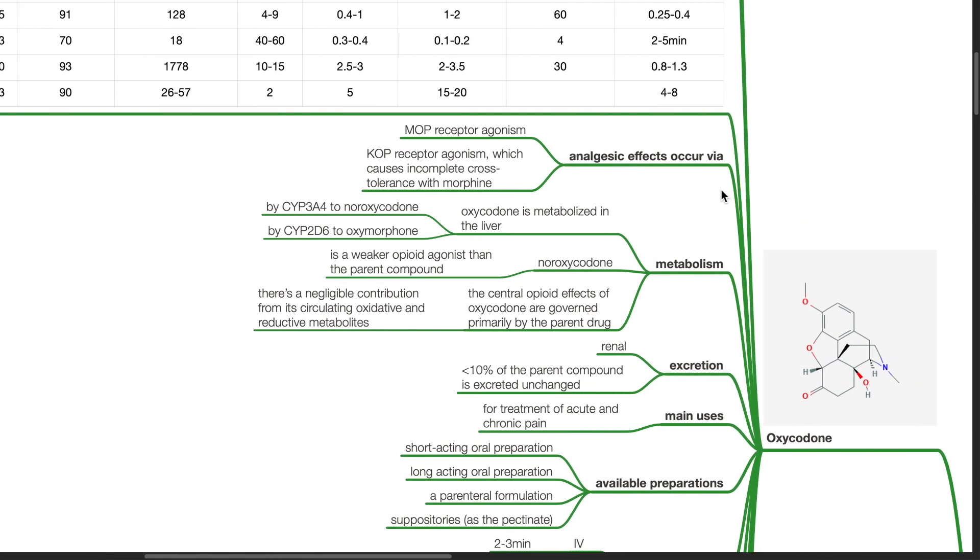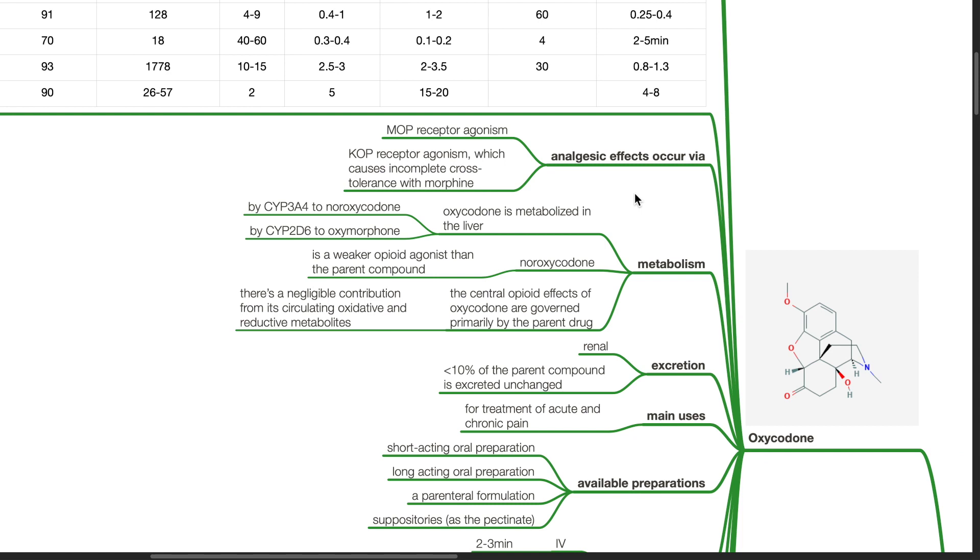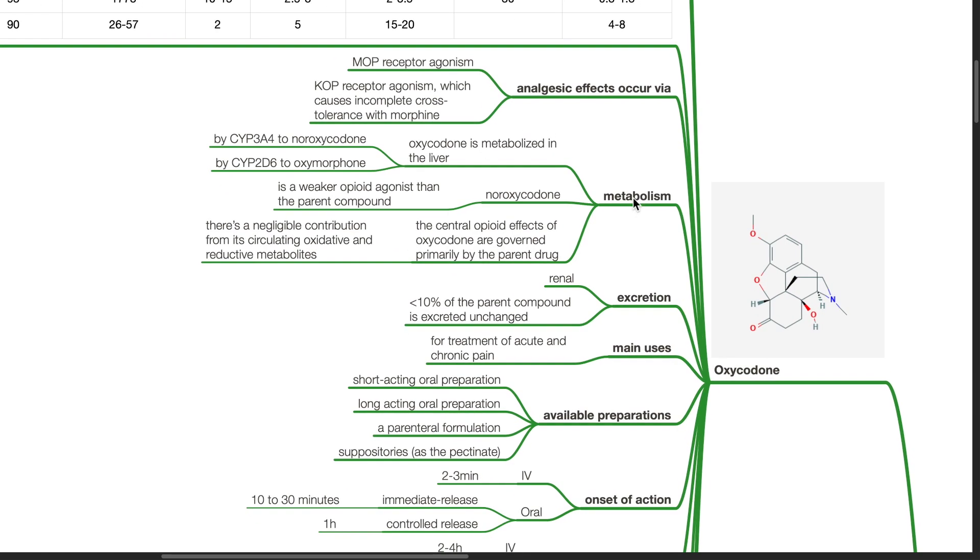Analgesic effects occur via MOP receptor agonism and KOP receptor agonism, which causes incomplete cross-tolerance with morphine. Metabolism. Oxycodone is metabolized in the liver by CYP3A4 to noroxycodone and by CYP2D6 to oxymorphone. Noroxycodone is a weaker opioid agonist than the parent compound. The central opioid effects of oxycodone are governed primarily by the parent drug. There is a negligible contribution from its circulating oxidative and reductive metabolites.